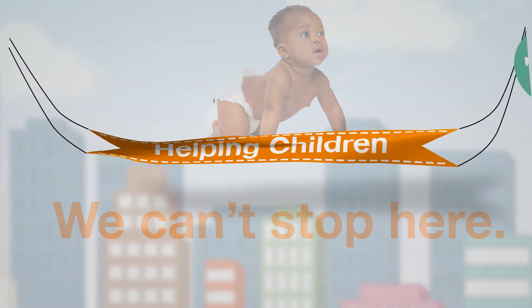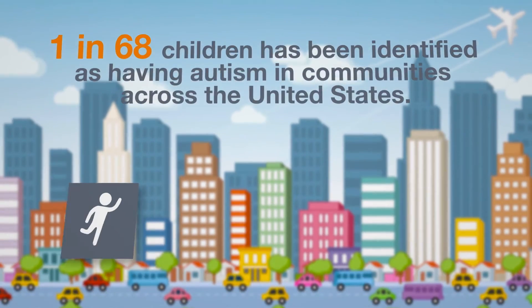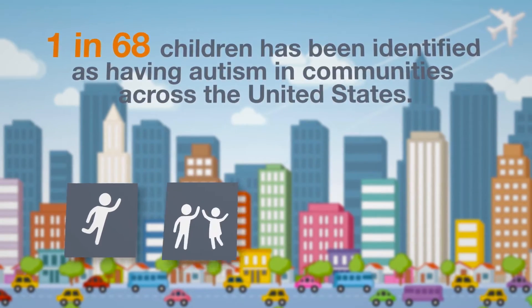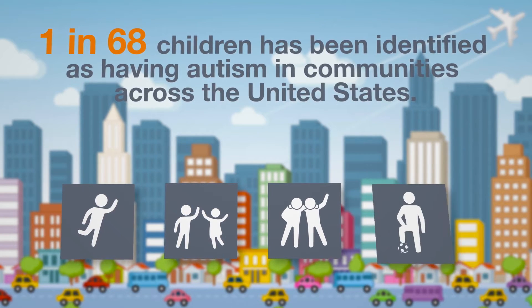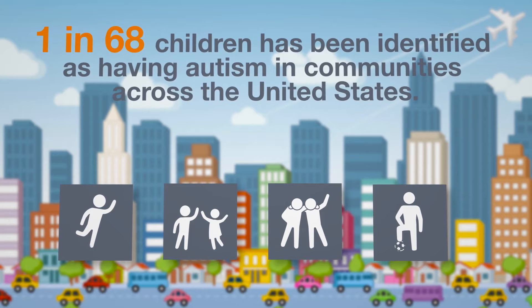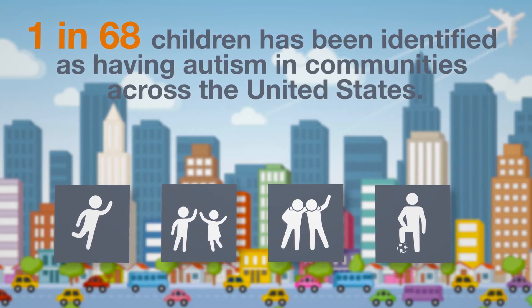Our research has found that an estimated 1 in 68 children has been identified as having autism in communities across the U.S. Because of the work of our center over the past decade, we know more about these children and how to best support individuals, families, and communities.